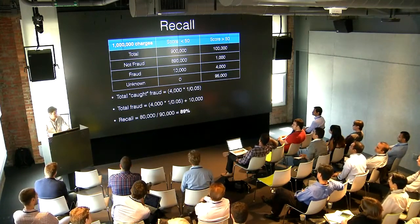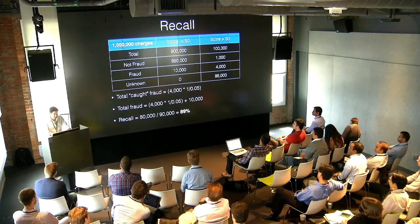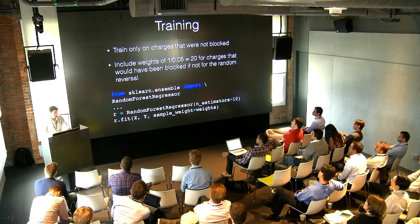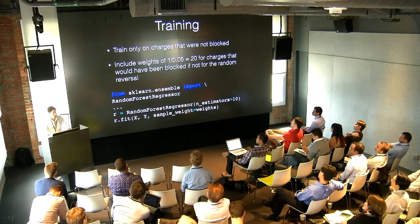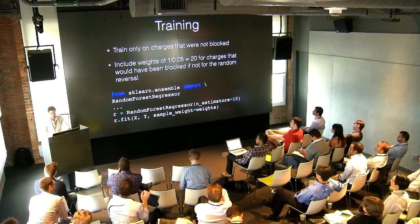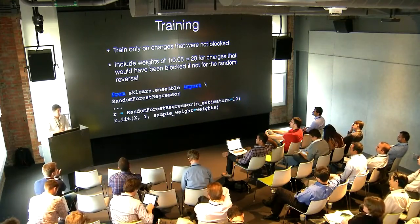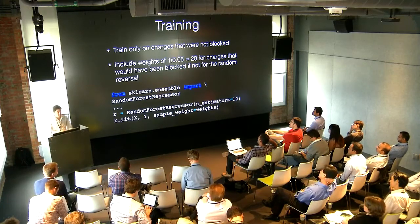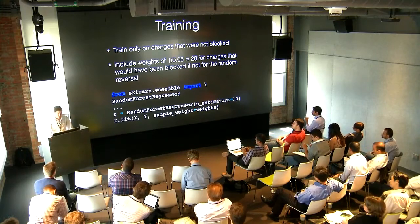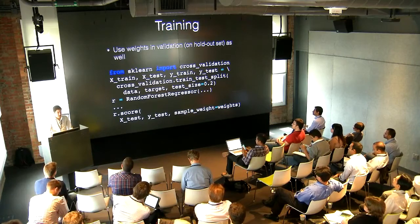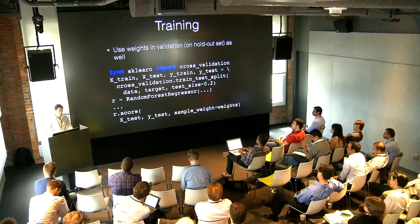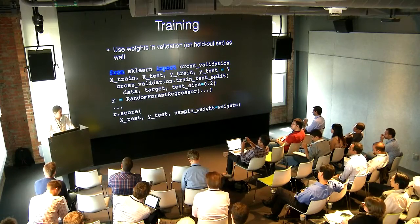When we train a new model, we drop from the dataset any charge for which we do not observe the outcome. Charges we block are not part of the next training dataset. For the ones we would have blocked but let through probabilistically, we weight them by a factor of 20 — because for every charge we observed the outcome for, there are 19 other similar charges we didn't observe. We can specify a vector of weights when training with scikit-learn, and in cross-validation too. All charges let through plus the probabilistically-allowed ones multiplied by this weight of 20 give our first approximation to the unconditional distribution.